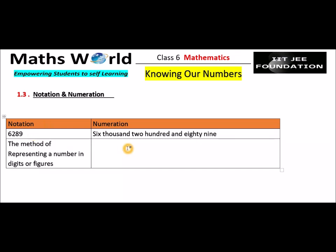Coming to 6289 inverse, the method of expressing a number in words is called numeration. A number in words is called numeration. For example, take another number: 52.